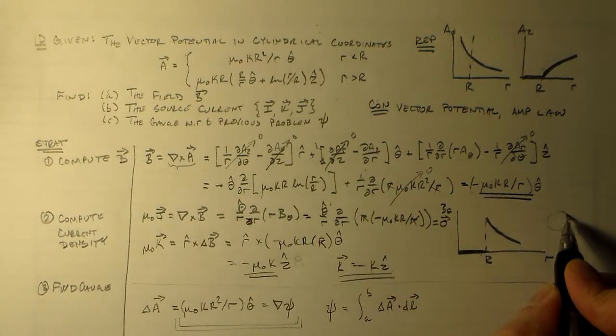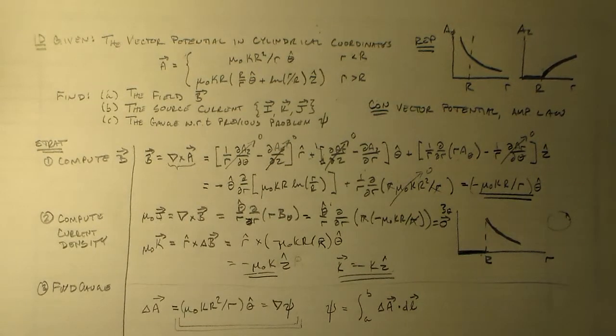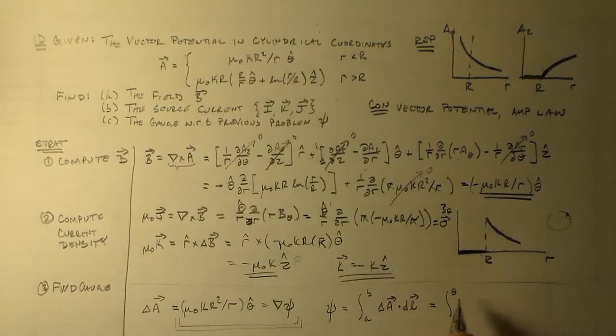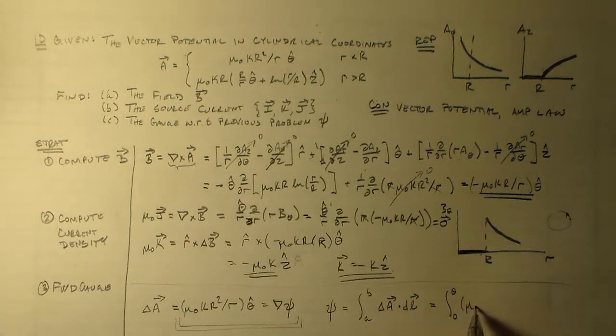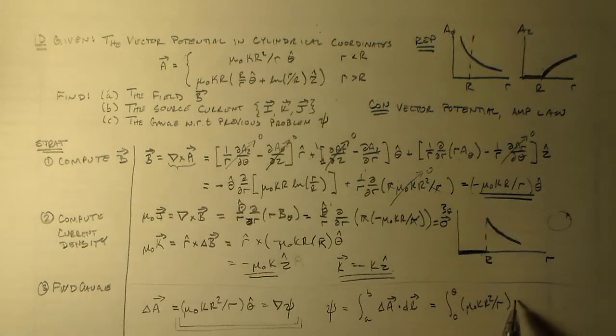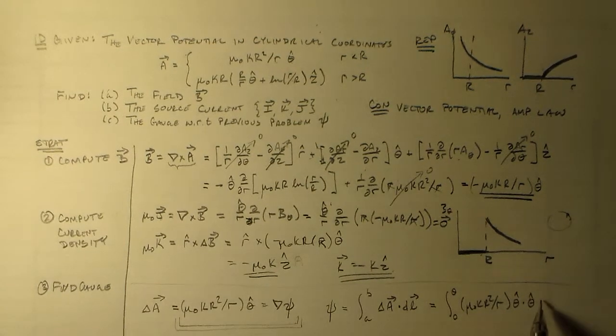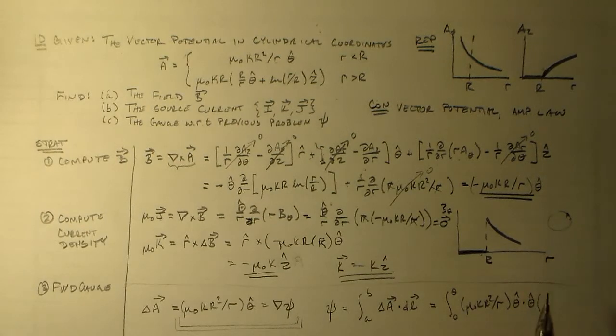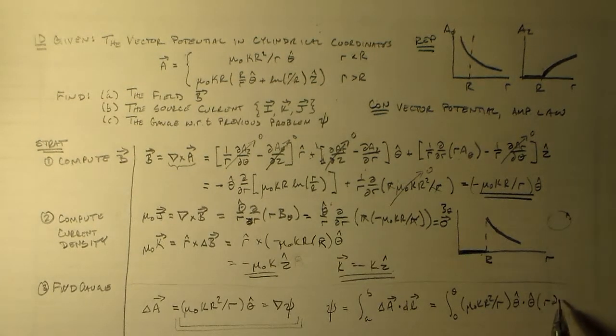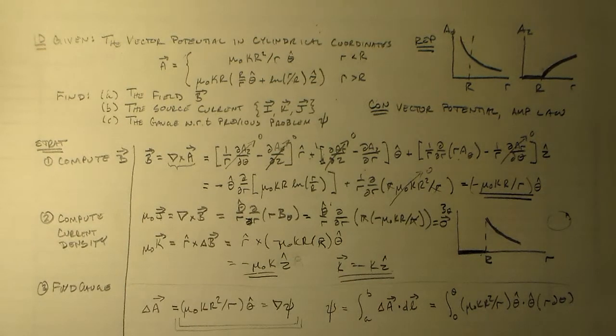So we may as well make this path as easy as possible and just go a little bit around a circle. Go from here to here, because this is in the theta direction. So we'll integrate from zero to theta times this delta A mu naught k big R squared over little r. We have theta dot theta. And if we come out here, we have r d theta out here.